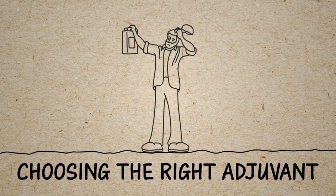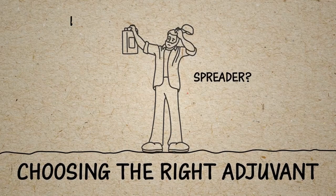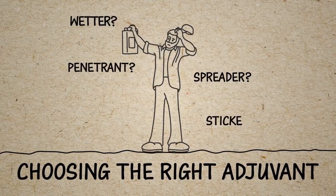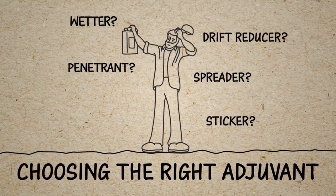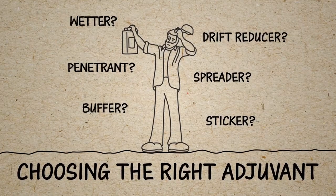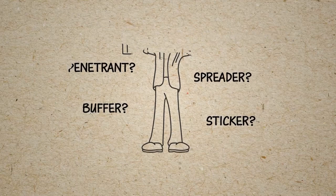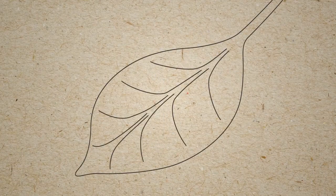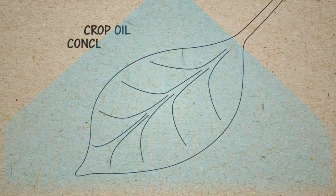Do I need a spreader, wetter, penetrant, sticker, drift reducer, or a buffer? Let's jump right in and help demystify the process. The five most commonly used types of foliar adjuvants are: